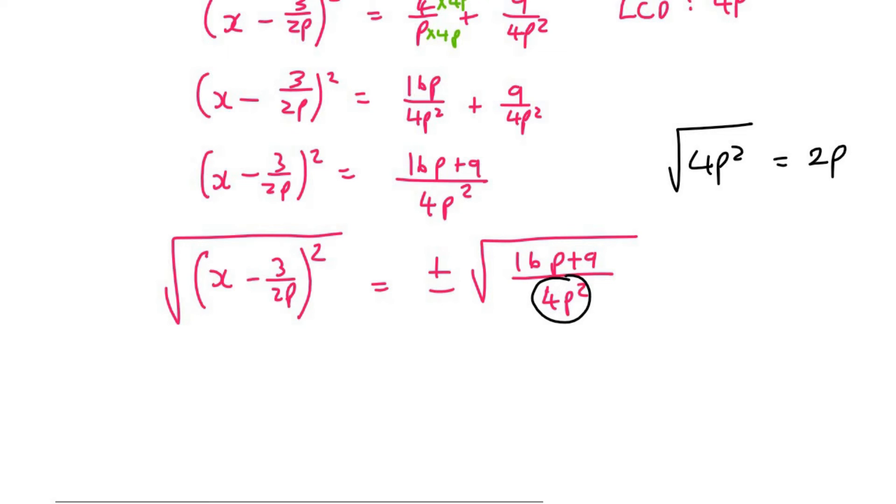Some of you at home might be saying, yeah but Kevin can't we take the square root of 16 and can't we take the square root of 9? Guys we can't because it's not one term. You see there's a plus in between. So the 4p squared, we're going to take the square root of that, and so in the next step we'll be able to say the following. We can say plus minus the square root of 16p plus 9 and then over 2p. See how the 2p is no longer inside the square root.